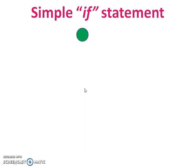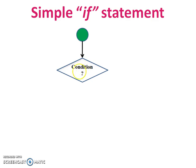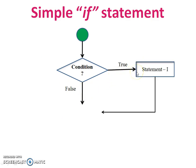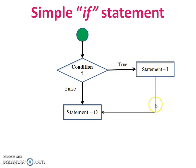The flowchart starts — execution is going on inside the program. A condition occurs during execution, and there are two possibilities: either the condition is true or false. If the condition is true, Statement A will be executed, and then Statement B will be executed. If the condition is false, Statement A is skipped and execution goes directly to Statement B.